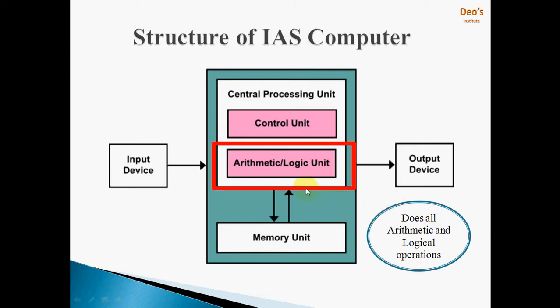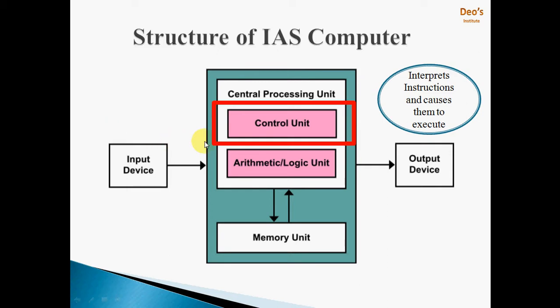The next block is the Arithmetic Logical Unit, which performs all arithmetic and logical operations — since the basic function of any program instruction is an arithmetic or logical operation, a separate part is required to perform this. Next is the Control Unit, which interprets instructions and causes them to execute. In short, the control unit controls the working of all elements of the processor — by interpreting instructions, it tells the ALU which data to fetch from memory, what operation to perform on the operands, and where to store the data after the operation.